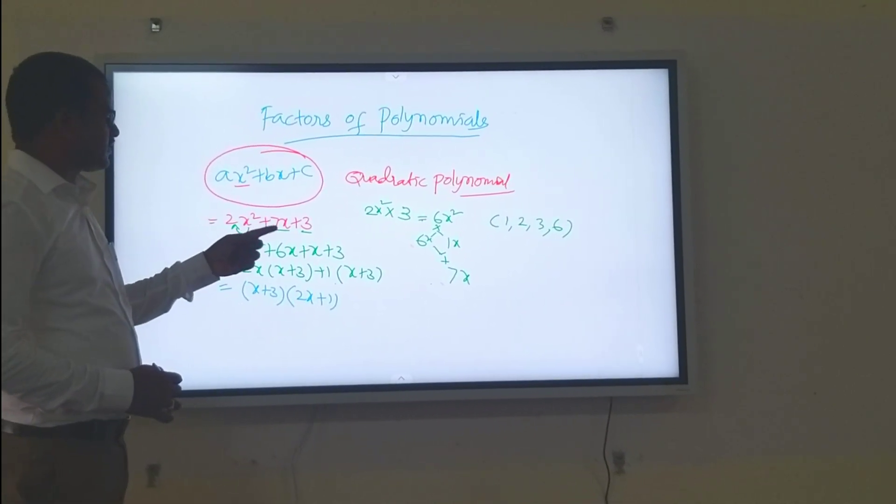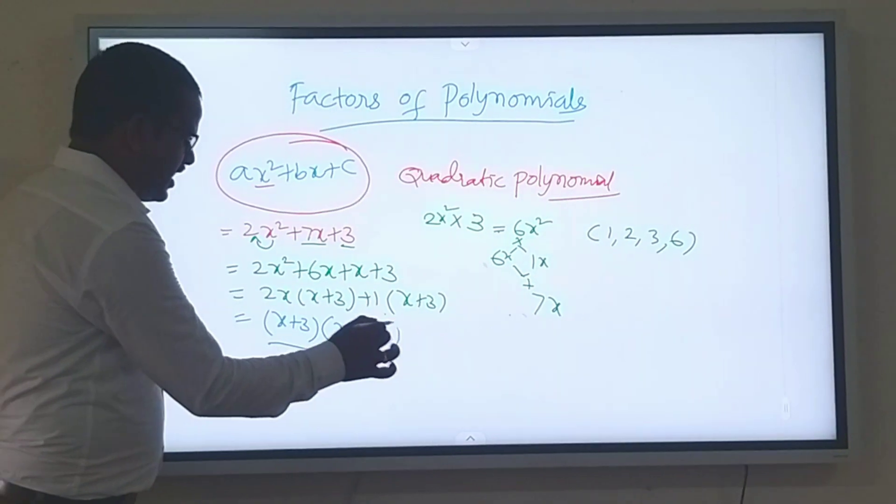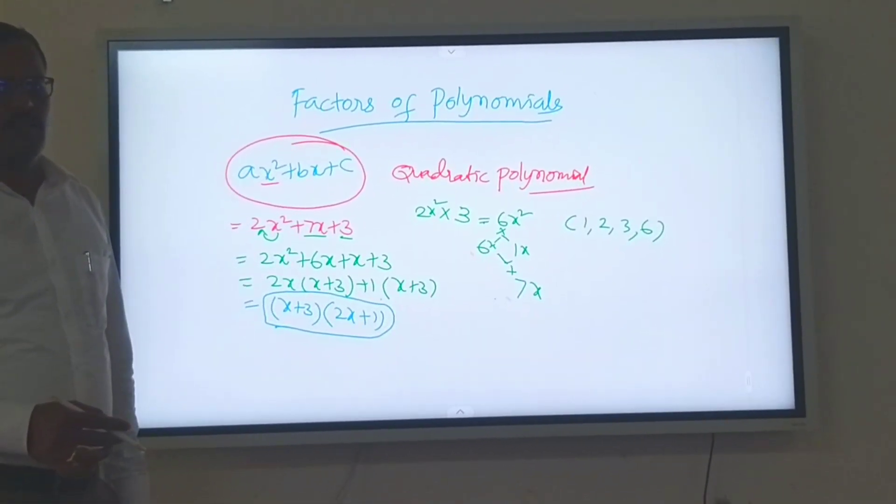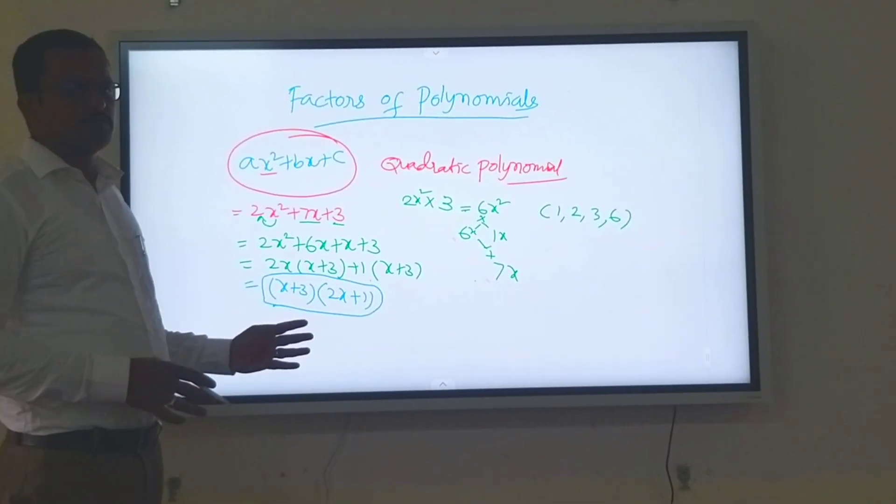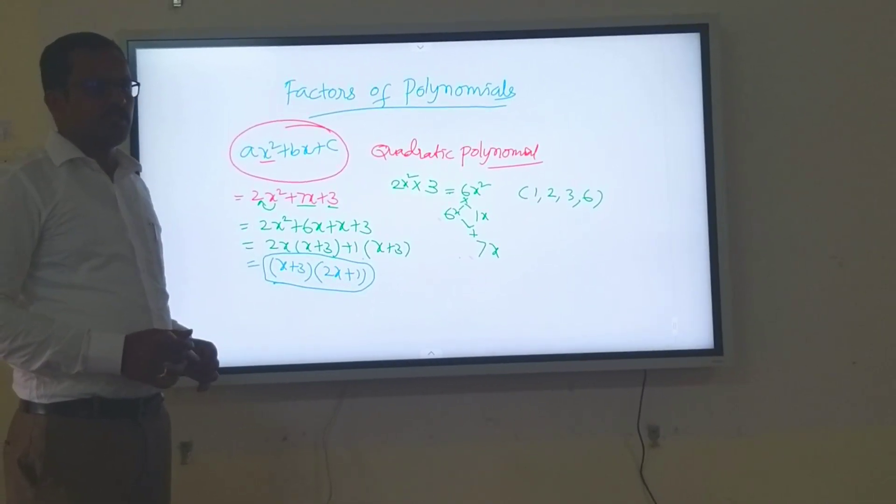Therefore, 2x square plus 7x plus 3 can be factorized as x plus 3 into 2x plus 1. In this way we can solve many problems related to quadratic. Thank you.